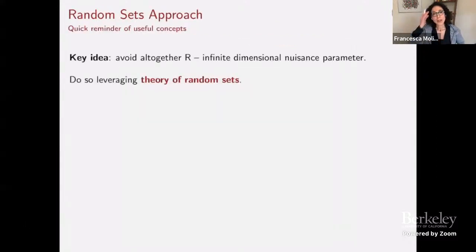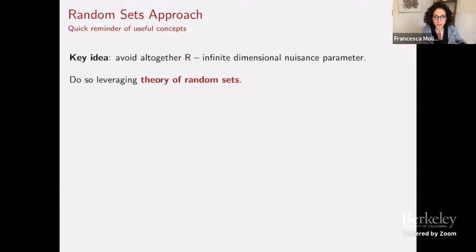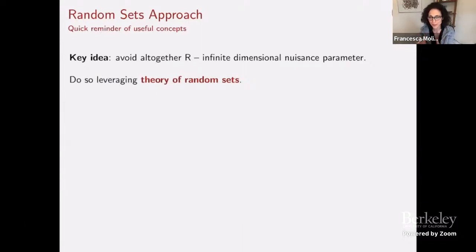So let me tell you what we actually do to deal with this problem. Our key idea is to avoid altogether working with this infinite dimensional nuisance parameter — the selection mechanism — and do that by leveraging the theory of random sets. The idea is intuitively very simple: the model predicts a set of outcomes, and there is a lot of work in mathematics that gives us probability distribution notions, expected value, and so on for sets. So why not use the tools for what our model actually predicts?